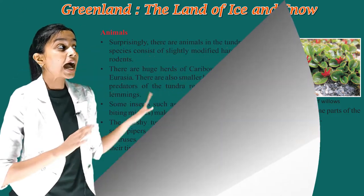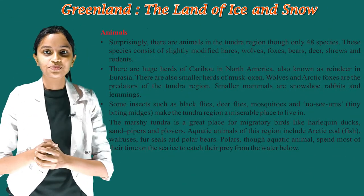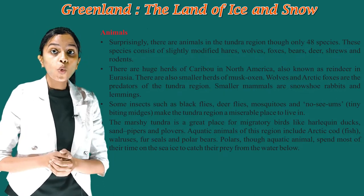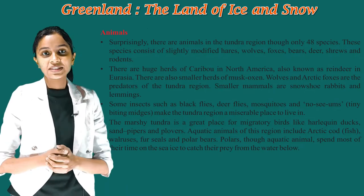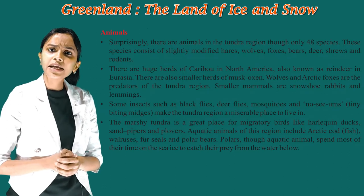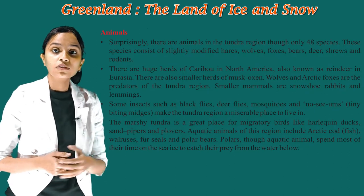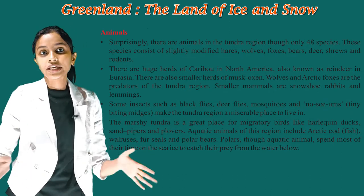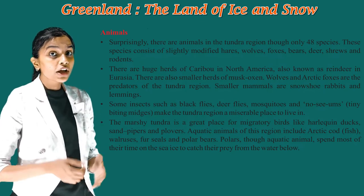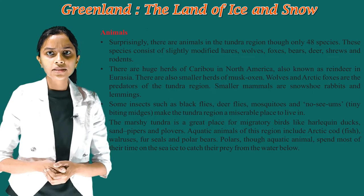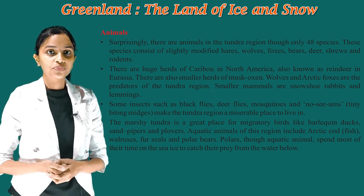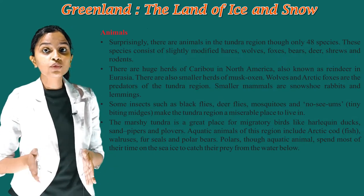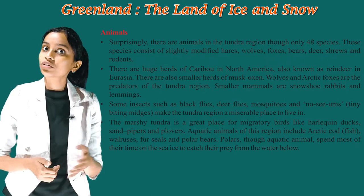Now it's time to see the animals of that region. Surprisingly, there are animals in the Tundra region, though only 48 species. These species consist of slightly modified hares, wolves, foxes, bears, deers, and rodents. There are huge herds of caribou in North America, also known as reindeer in Eurasia. There are also smaller herds of musk oxen.